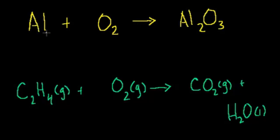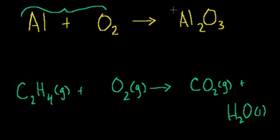You've got some aluminum, you have some oxygen gas — a diatomic oxygen molecule — and then you end up with aluminum oxide. I have my reactants, the things that react, and then I have the products of this reaction.